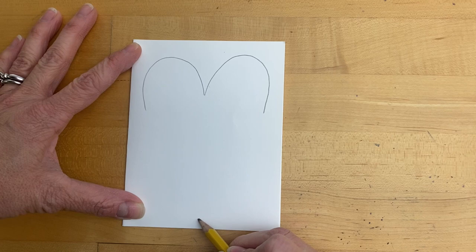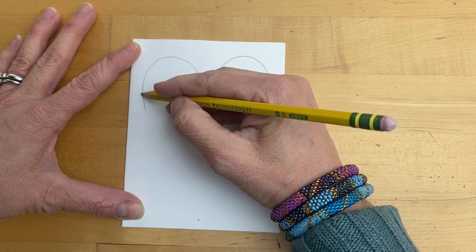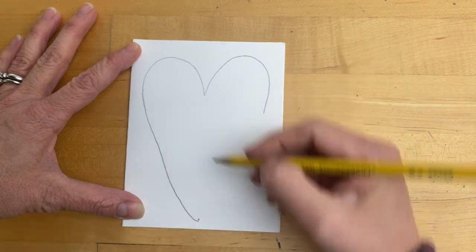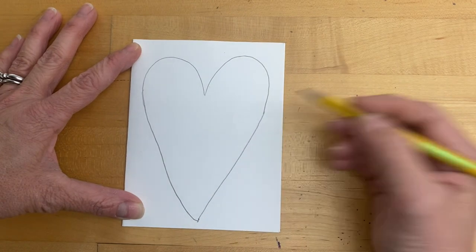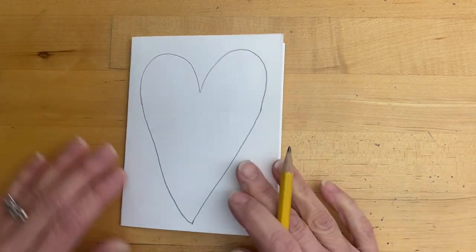And then where you want the point, put a little dot at the bottom. And then we're going to take that three to the point and back up to that other side of the three. So that's our first step.